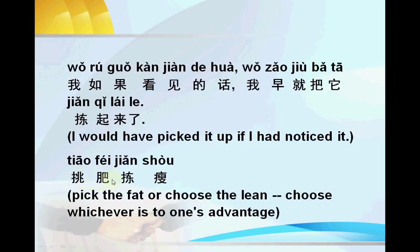Another example: 捡肥捡瘦 (jiǎn féi jiǎn shòu). '捡' means pick or choose, '肥' means fat, '瘦' means lean or thin. This phrase means: choose whichever is to one's advantage — you pick something you really want or pick the best option for yourself. This is '捡' meaning you make a choice, choose something, select.